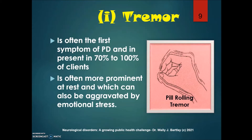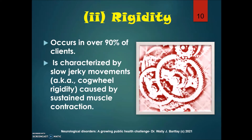Tremor is often the first symptom of Parkinson's disease and is present in between 70 to 100 percent of all clients affected. It is often more prominent at rest and can be aggravated by emotional stress. You often see these clients having a pill-rolling tremor in their hands. Rigidity occurs in over 90 percent of clients — that analogy of rusty gears or cogwheel spokes comes to mind.